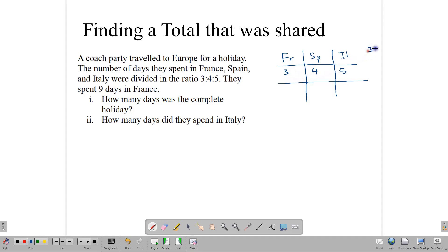Notice that if you add 3 plus 4 plus 5, you get 12. Which means that 3 twelfths of the time was spent in France, 4 twelfths was spent in Spain, and 5 twelfths was spent in Italy. Now, what do we know about the number of days they spent in France? They spent 9 days in France. That's very important. If they spent 9 days in France, how many days did they spend in Spain and Italy?